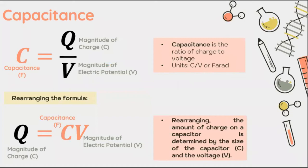We know that in order for us to measure the amount of energy a capacitor could hold in terms of capacitance, we use the equation C equals Q over V, where C is measured in farads, Q is the magnitude of the charge, and V is the electric potential or voltage at that capacitor. Rearranging this formula, we also get Q equals CV. These are the equations we'll use for solving individual capacitance and charge stored in a capacitor.